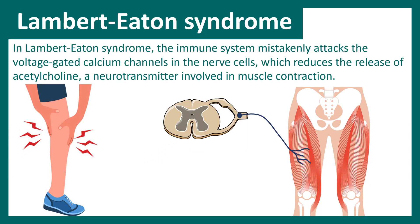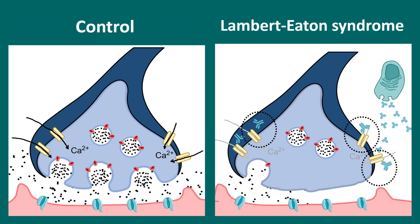Another condition is Lambert-Eaton syndrome, in which the immune system mistakenly attacks the voltage-gated calcium channels in the nerve cells. Since the VGCCs present in the presynapse are crucial for vesicle fusion events at the presynaptic terminal, when these channels are non-functional there is a problem with vesicle fusion. This leads to less synaptic release, lower neurotransmitter levels in the synaptic cleft, weaker stimulation, and muscle fatigue or reduced muscle functionality.